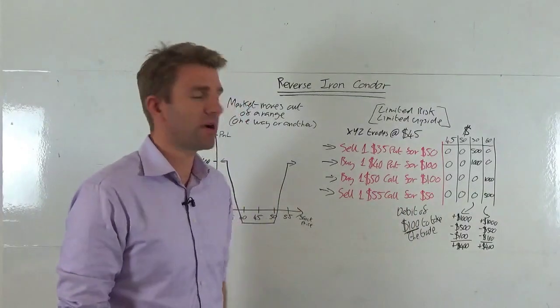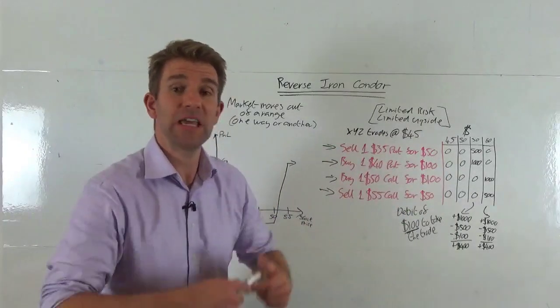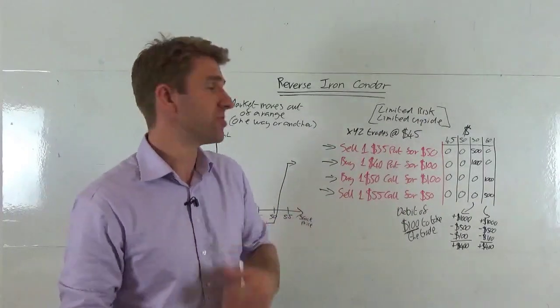The same outcome occurs if the stock goes to exactly $50 at expiry: both puts expire worthless, the $50 call has the right to buy at $50 when trading at $50 — zero value — and the $55 call is higher than the expiry price so also zero value. We've lost $100 on that deal.